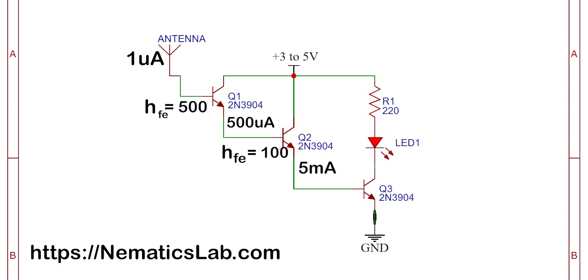And lastly you guessed it right, this 5 milliamperes get again amplified by the third transistor. Let's say this time the HFE value is only 10. And this time the output current will be 50 milliamperes which is more than enough to drive our LED which requires only 20 milliamperes to operate.